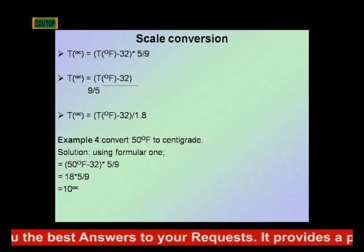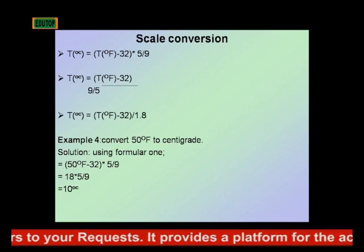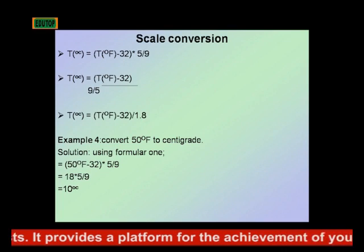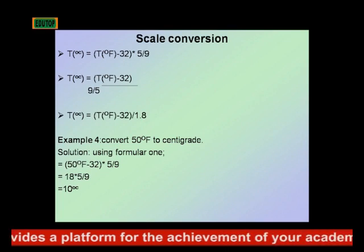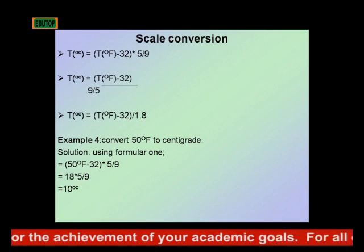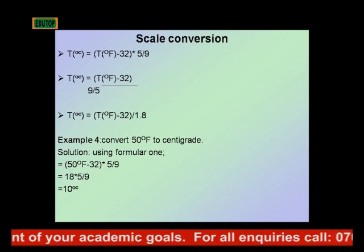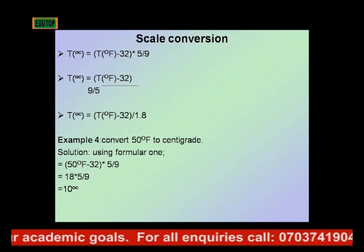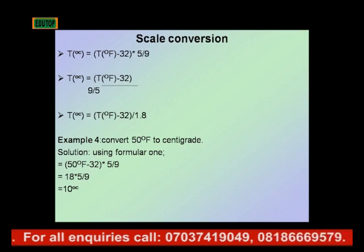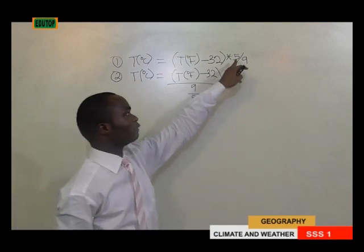Formula 2: Temperature in degrees Celsius equals temperature in degrees Fahrenheit minus 32, divided by 9, all over 5. The difference between formula 1 and formula 2 is in the multiplication and division, which changes the position of 5 and 9.